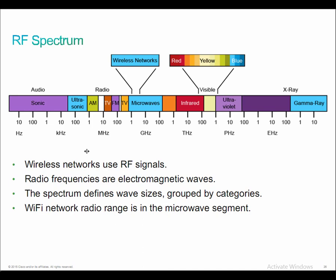When we talk about the RF spectrum, we have audio, radio, visible, and x-ray spectrum. It's not just radio frequencies — we have sonic, ultrasonic, amplitude modulation, frequency modulation, television, microwave, infrared, and so on. A lot of devices use radio waves to send information, but the radio component is only a small portion of the overall RF spectrum.